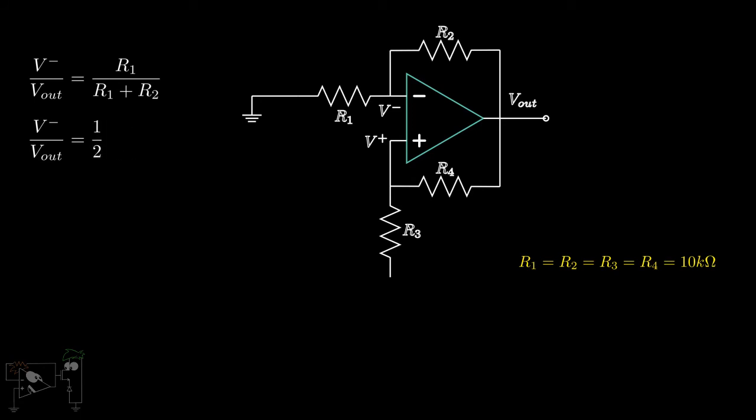As no current flows through the input terminals of the op-amp, no current can flow through R3 and R4. Hence, V-out is equal to V-plus, or V-plus by V-out is 1.